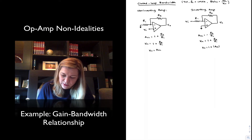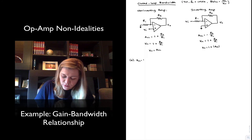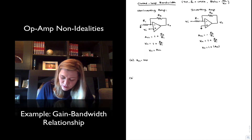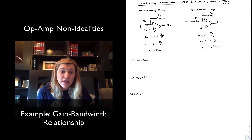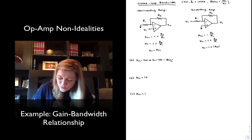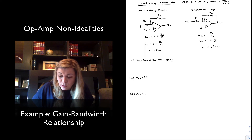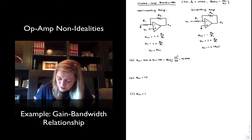In the case of the non-inverting amplifier, let's consider three scenarios. In the first scenario with a signal gain of 100, the noise gain is also 100, so the closed-loop bandwidth is 10 to the 6 divided by 100, which gives a bandwidth of 10 kHz.